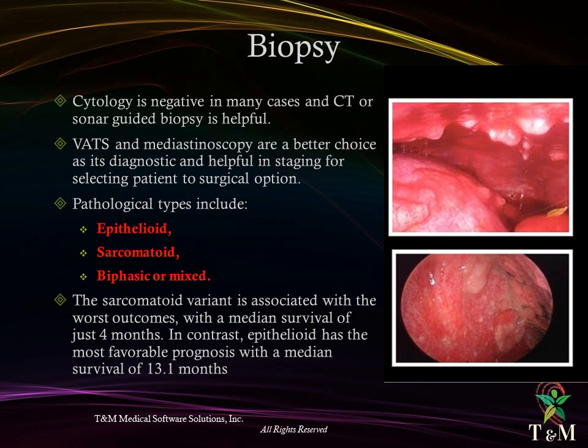There are three pathological types of mesothelioma: epithelial, sarcomatous, and biphasic. Sarcomatoid type has the worst prognosis, with median survival not exceeding 4 months. On the other hand, epithelial pathology has a favorable prognosis with a median survival of around 13 months.